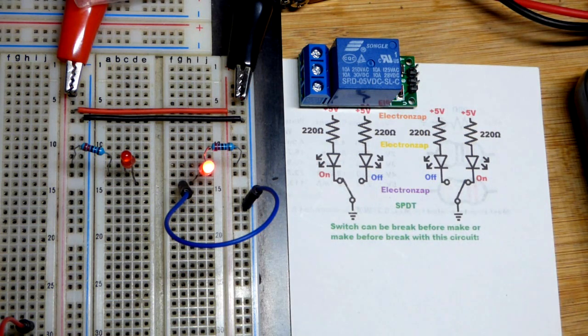So that would be double pole double throw in that case. Just remember they're both in the same direction. Whichever one is, the other one is in. So any case if you're new to switches, hopefully that helped clear things up.